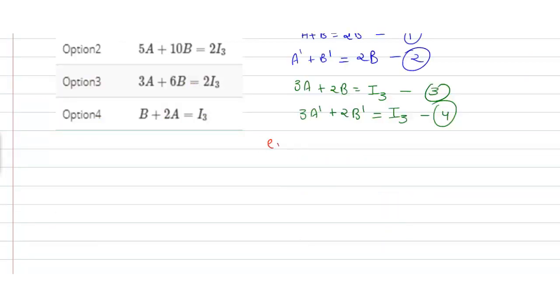Substituting equation second and equation fourth we have 3(2B - B^T) + 2B^T = I₃, that is 6B - B^T = I₃.